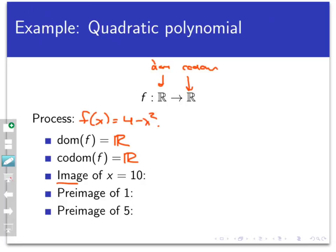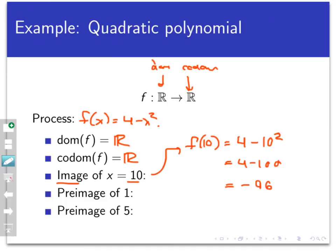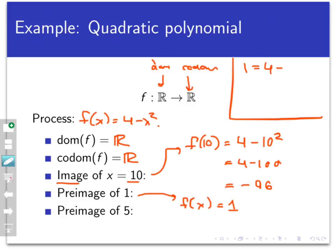What is the image of x equals 10? I start with x equals 10 and find its image: f of 10 equals 4 minus 10 squared, which is 4 minus 100, so the answer is negative 96. What is the pre-image of 1? I'm asking what x value, when put into this function, gives 1 as output. Setting 1 equals 4 minus x squared, I get x squared equals 3, so x equals plus or minus the square root of 3. There are two pre-images of 1, and both of those inputs get sent to 1 as an output.